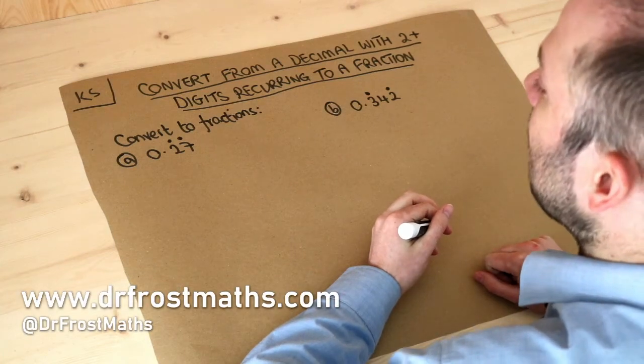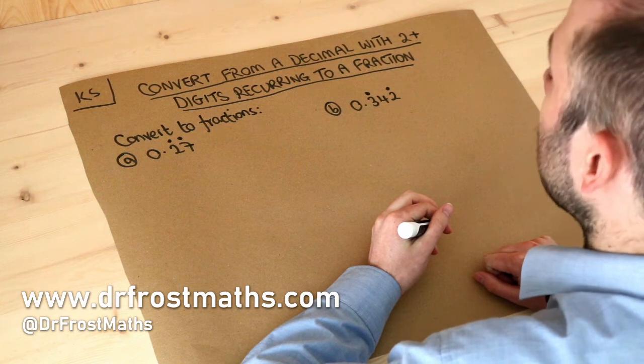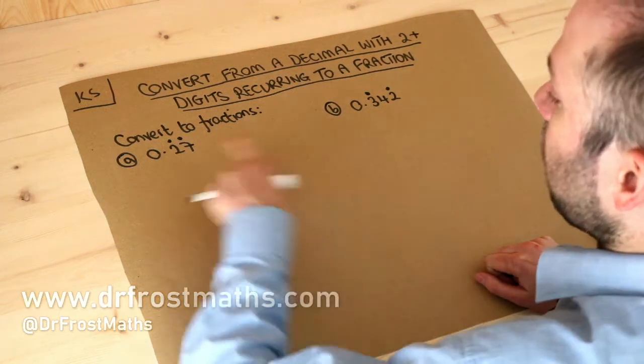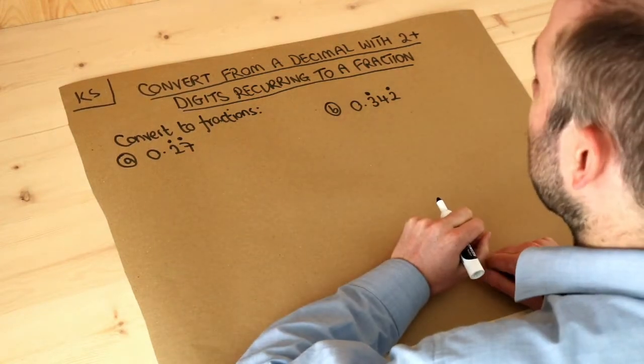Hello and welcome to this Dr. Ross Mass's key skill video on converting from a decimal with two plus digits recurring to a fraction. So we've got these recurring decimals, and I'll explain what that means in a second, and we're going to convert each of those to fractions.